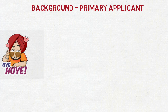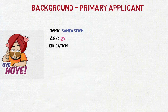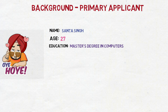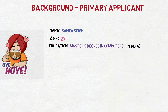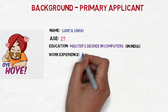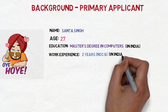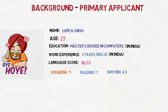Let's start with the background of the primary applicant. The name of the applicant is Santha Singh. Age is 27 and education is a master's degree in computers from India. Work experience of 2 years in NOC B in India. Language score for IELTS: speaking 7 bands, reading 7 bands, writing 6.5, and listening 8 bands. Family in Canada: he has a real brother who is a permanent resident in Canada.